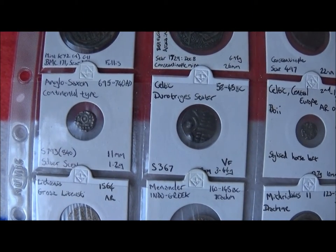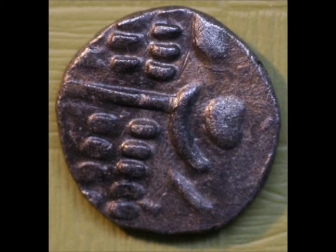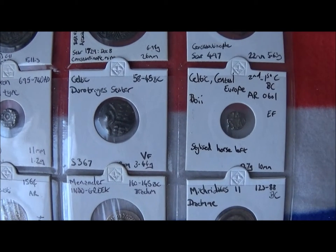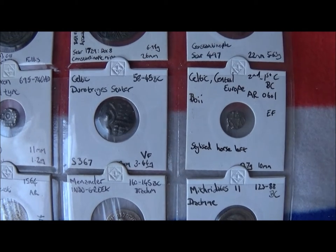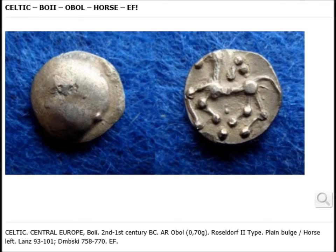We have here a Celtic Durotrig stater. These are tricky because they produced them in silver and debased metal, so it's not always easy to tell which is which.